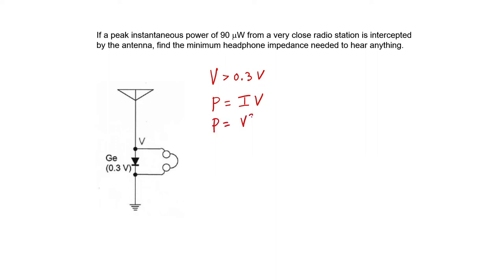Power equals V squared over R. And I'm now considering the headphones here to behave something like a resistor. In this particular problem, we're told that the power is 90 microwatts. This is the peak power, so this is going to correspond to the situation where the diode just barely turns on. And that's going to be the border where we can hear something.